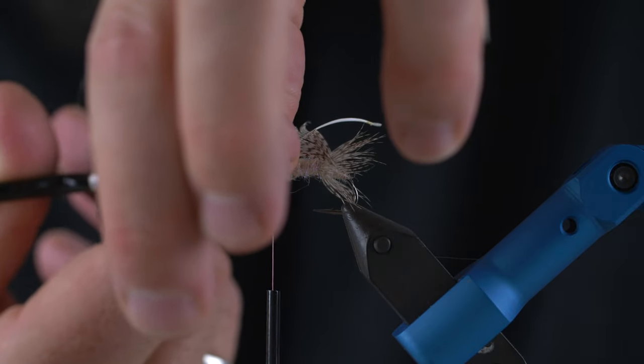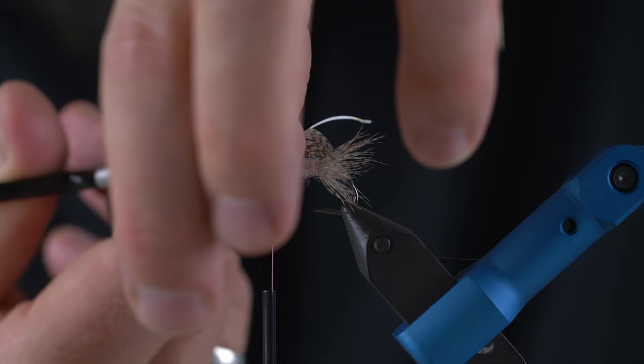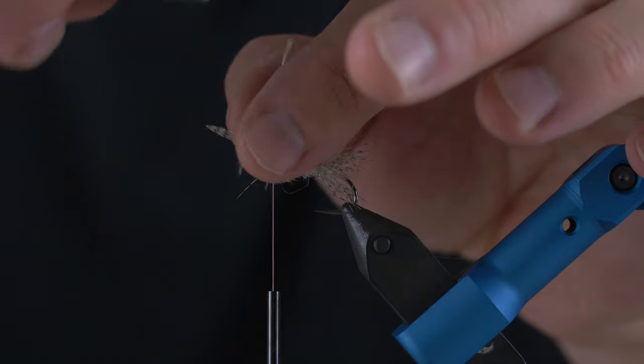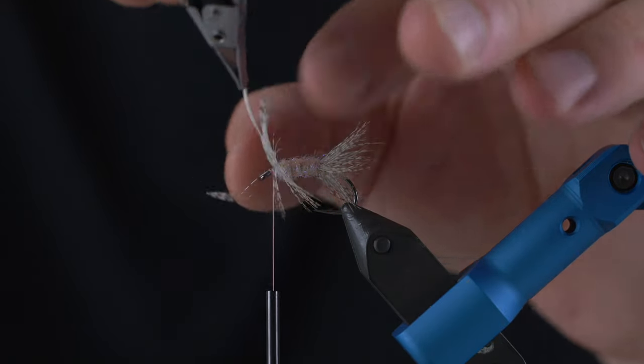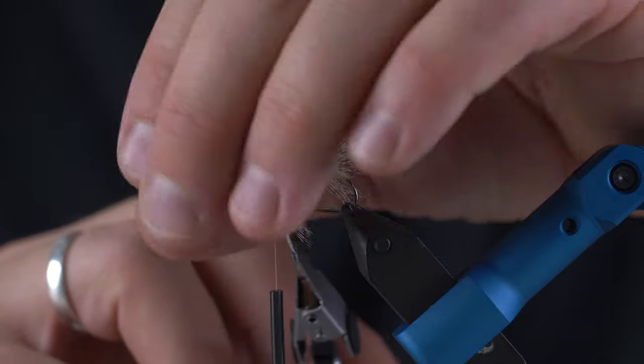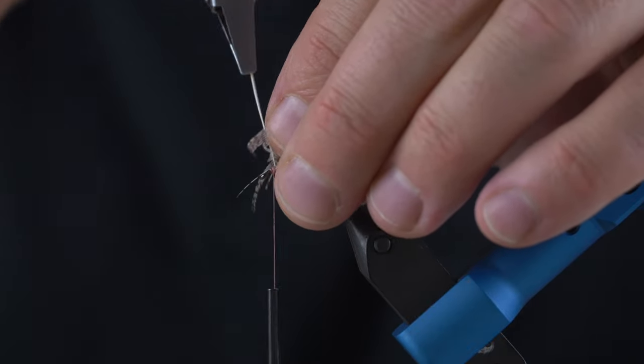And again this is one of these flies that can look like a small gamarus, it can look like something that's hatching, it can look like basically it just looks like so many different things all at once so the trout just have to grab it. Fold everything back while I turn.